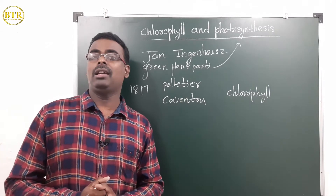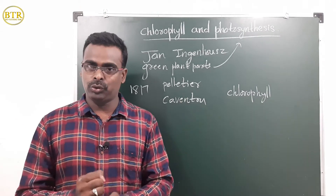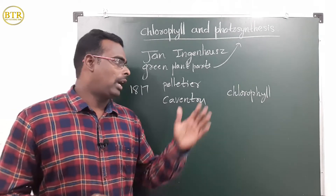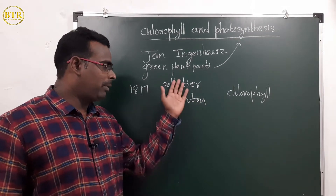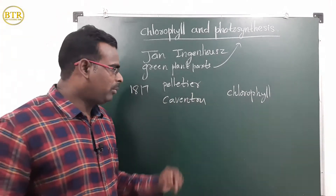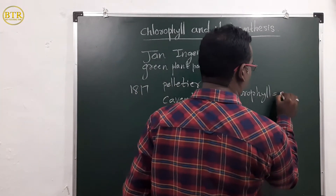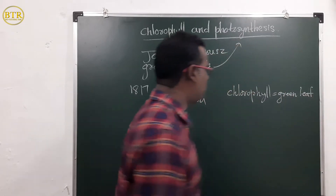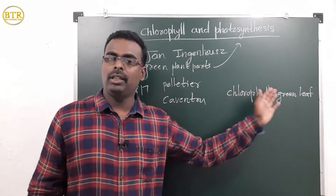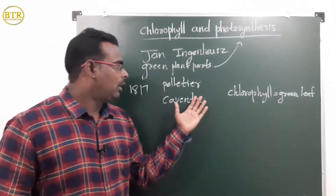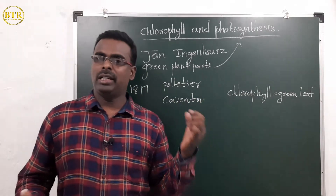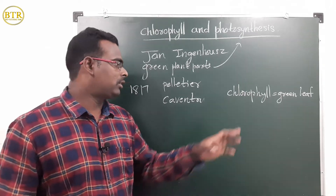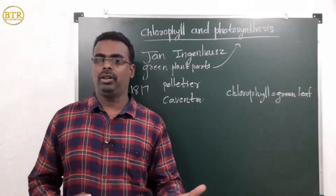They took the leaves, extracted the green colored substance, and named it chlorophyll. The meaning of chlorophyll is 'green leaf.' So, John Ingenhouse proposed that green plant parts carry out photosynthesis because of the presence of chlorophyll.